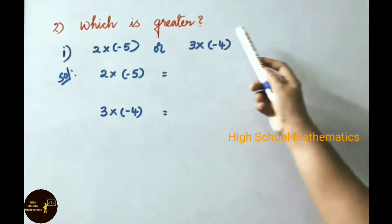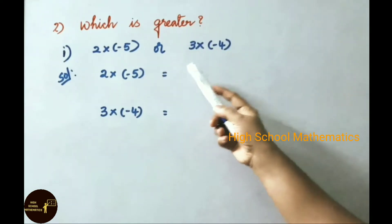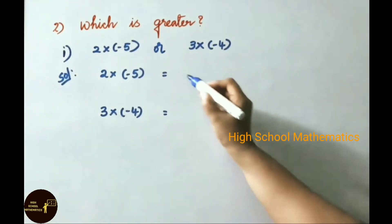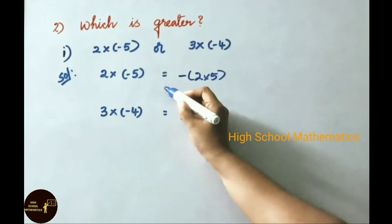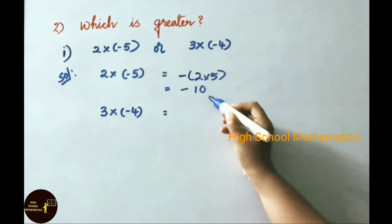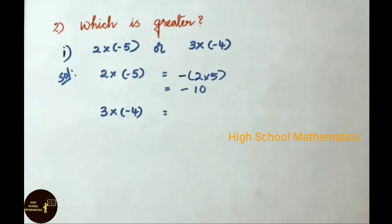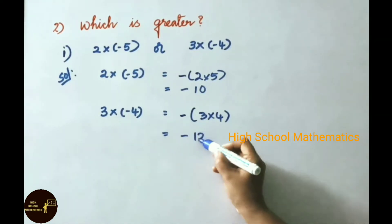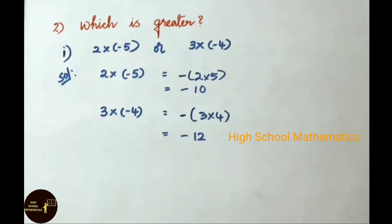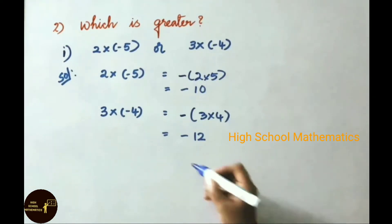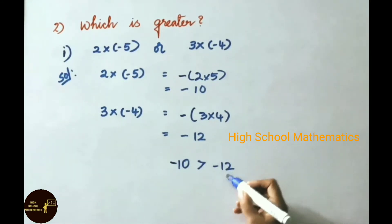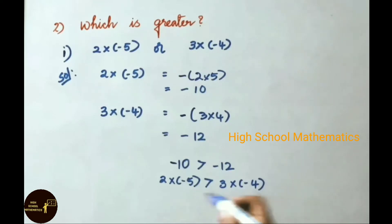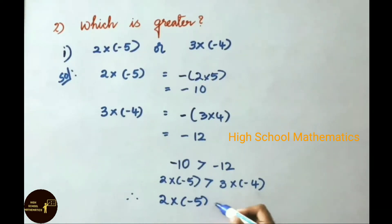See now question number 2: which is greater? First sum: 2 into minus 5, or 3 into minus 4? 2 into minus 5 equals minus of 2 into 5, that equals minus 10. And 3 into minus 4 equals minus of 3 into 4, that equals minus 12. So the answers are minus 10 and minus 12. Minus 10 is greater than minus 12. Therefore, 2 into minus 5 is greater.